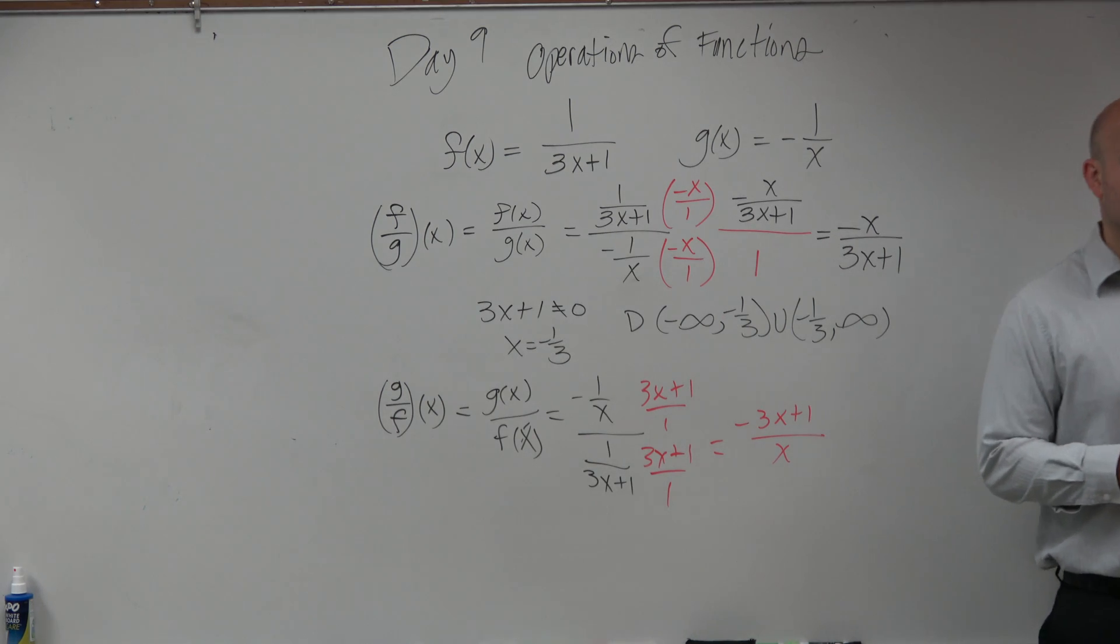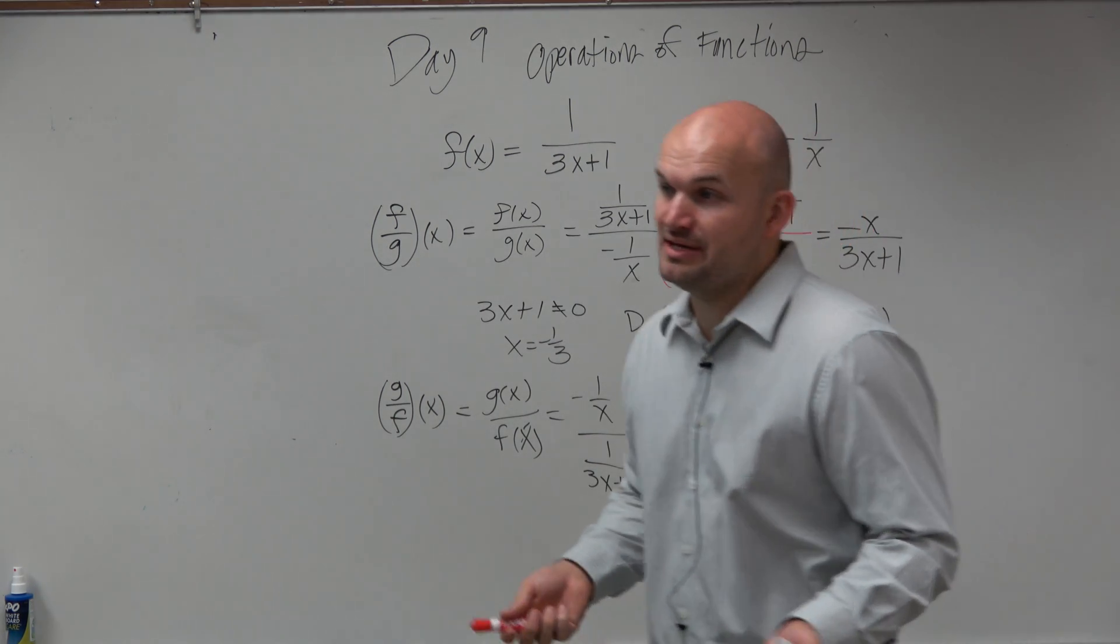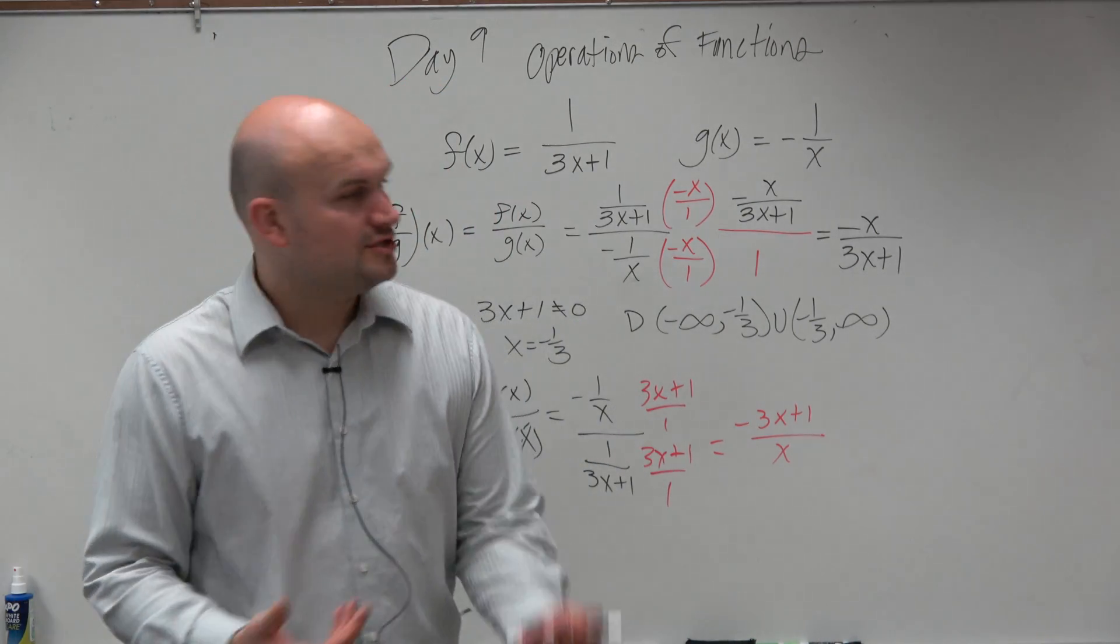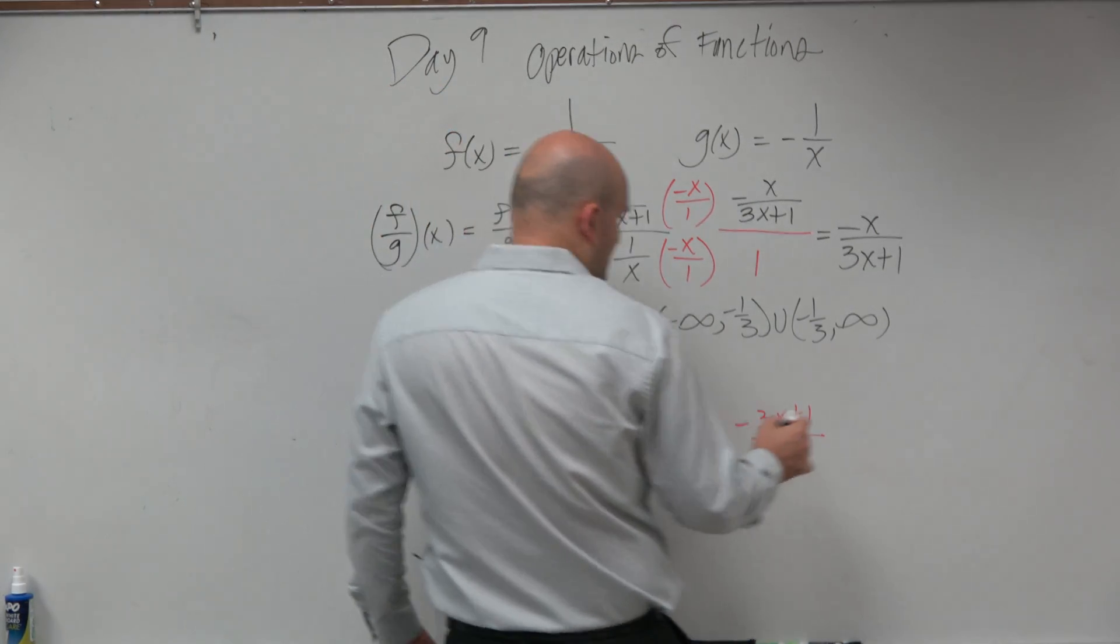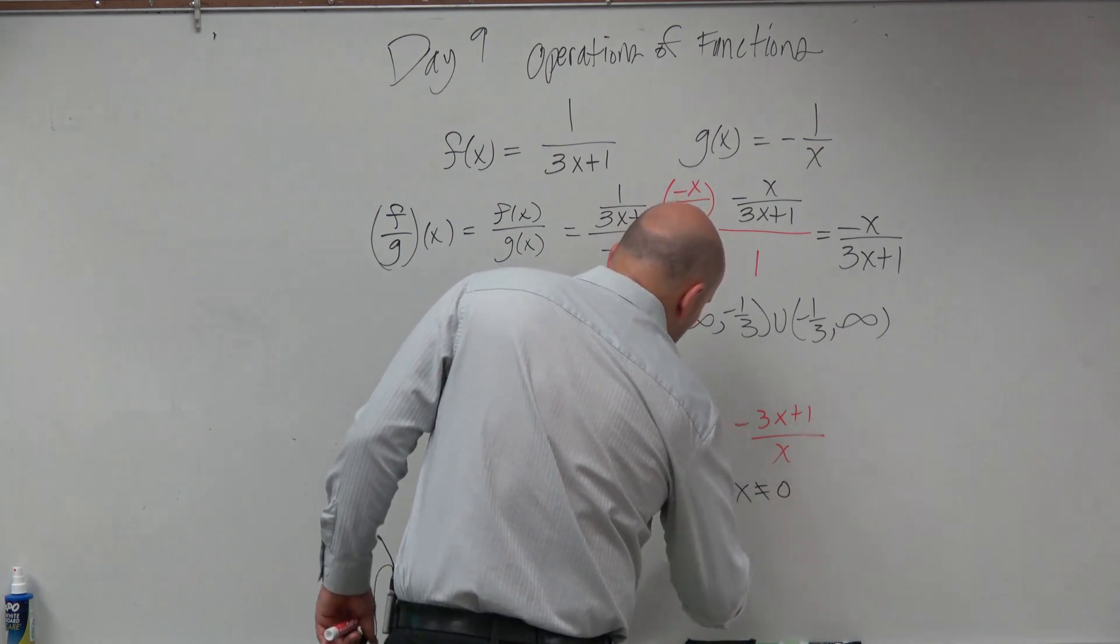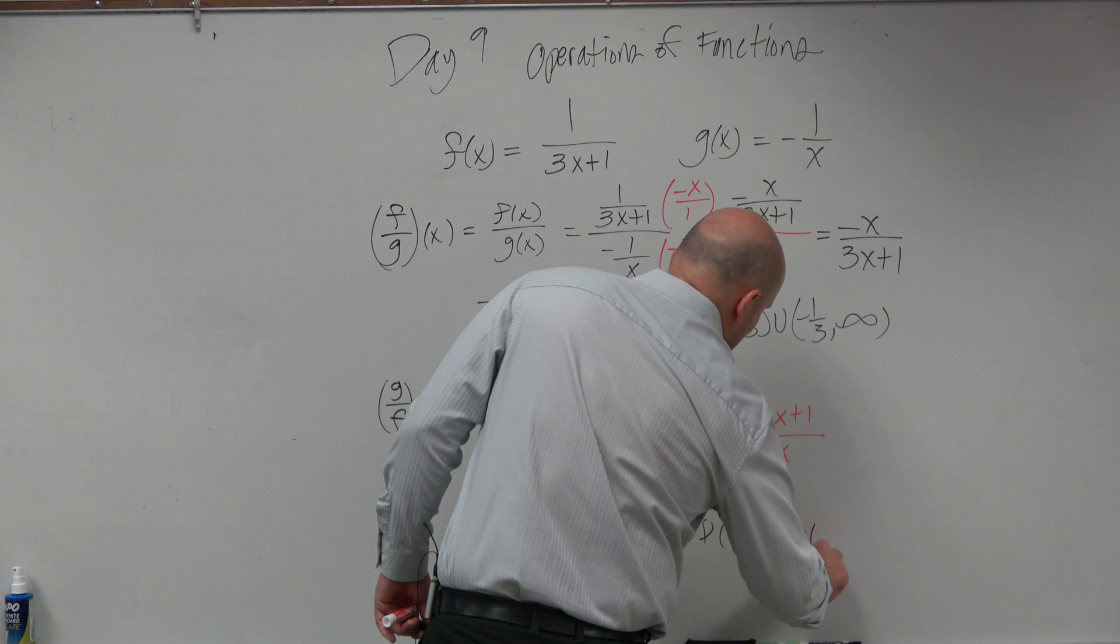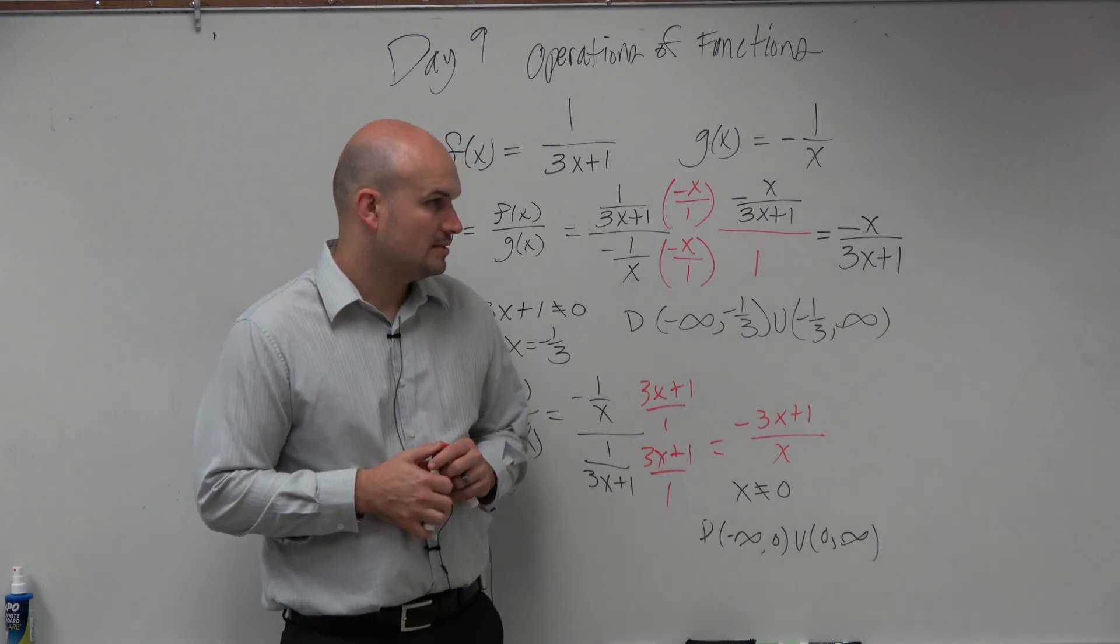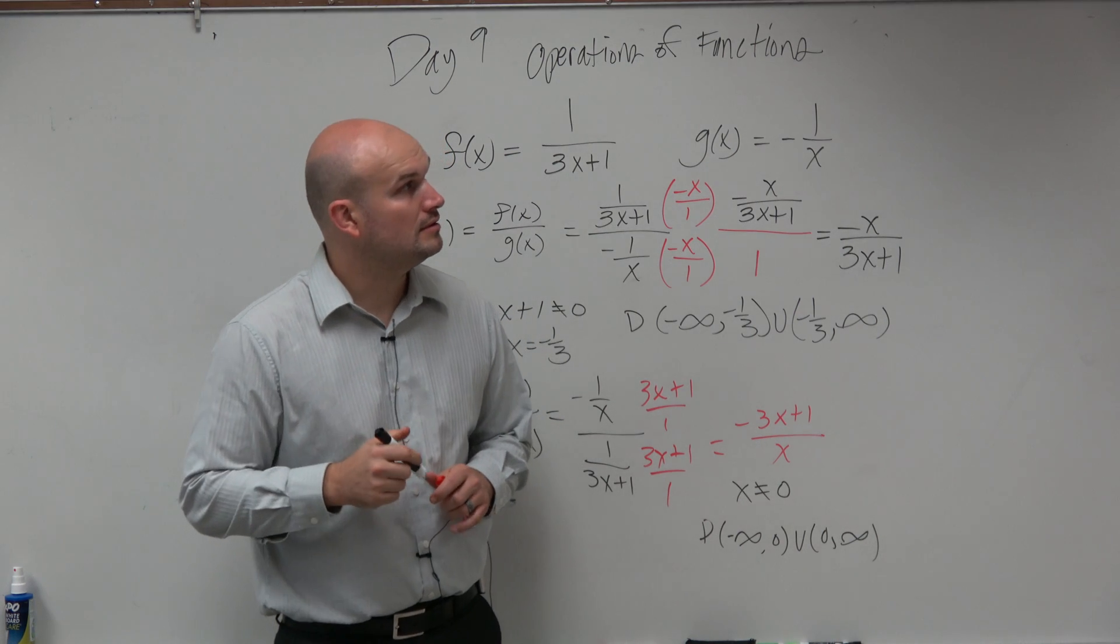Now we say, what cannot be in the denominator? What can x not be? What value is going to make 0 in the denominator? That is just 0. So we could say x cannot equal 0, so my domain is negative infinity to 0, union 0 to infinity.